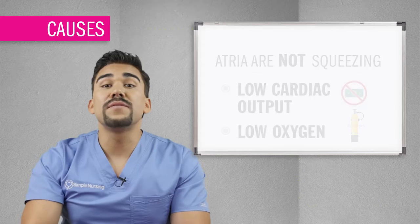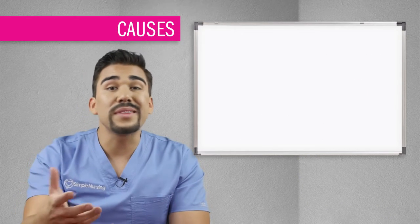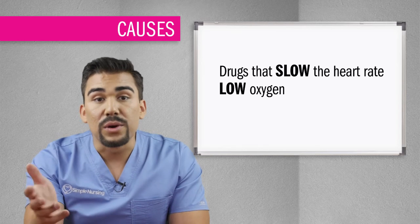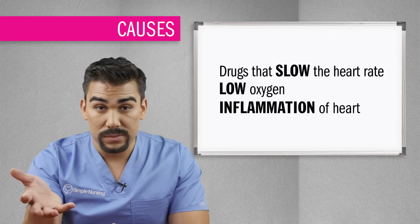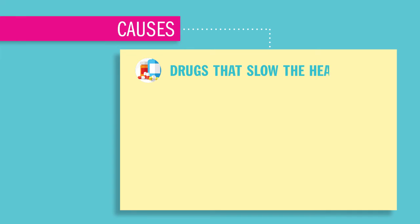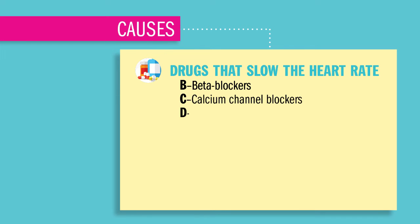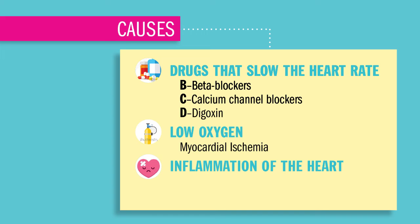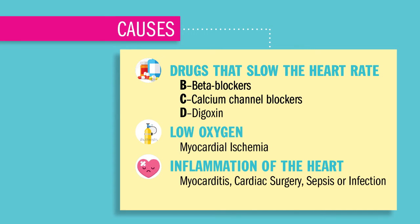Some causes of junctional rhythms all have to do with either low oxygen, drugs that slow the heart rate, or inflammation in the heart. Drugs that slow the heart rate are our B, C, and D drugs: beta blockers, calcium channel blockers, and digoxin. Low oxygen can come from myocardial ischemia. Inflammation in the heart can come from conditions like myocarditis, cardiac surgery, sepsis, or infections like Lyme disease and even rheumatic fever.